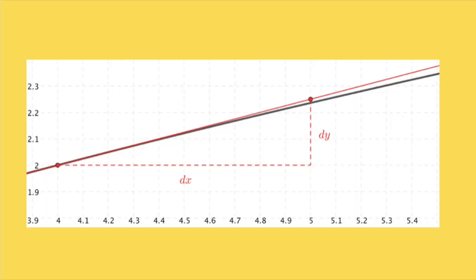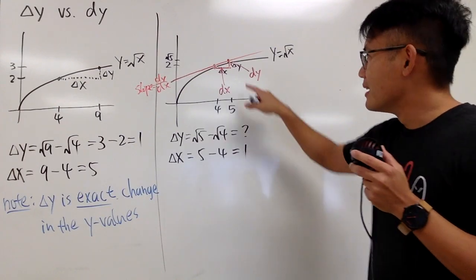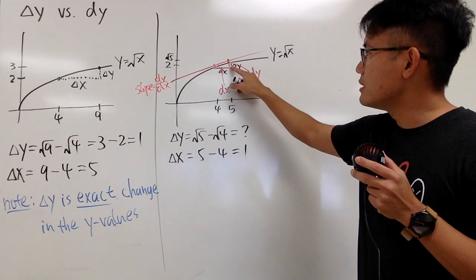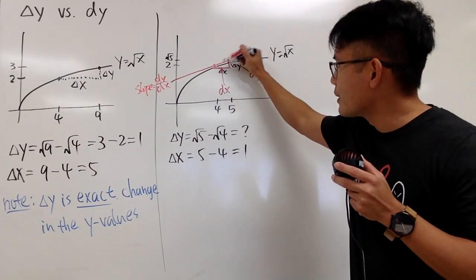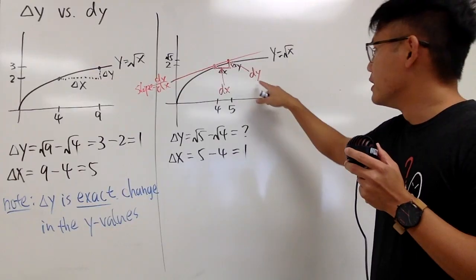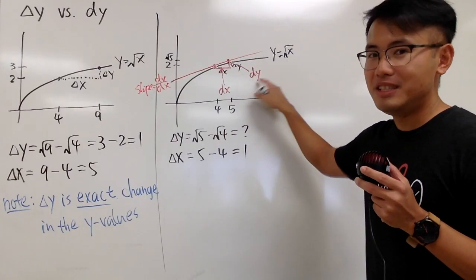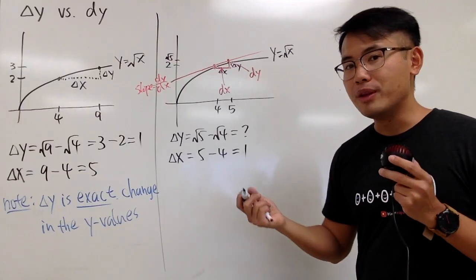But the good thing about this is that for this part right here, I can still draw the similar picture, like a little triangle. And this part is the dx part, and this part right here is the dy part. So you see that originally we were trying to get delta y, which is this distance, it was in black right here. But we cannot do that. It's okay, because I will show you how we can actually compute dy.